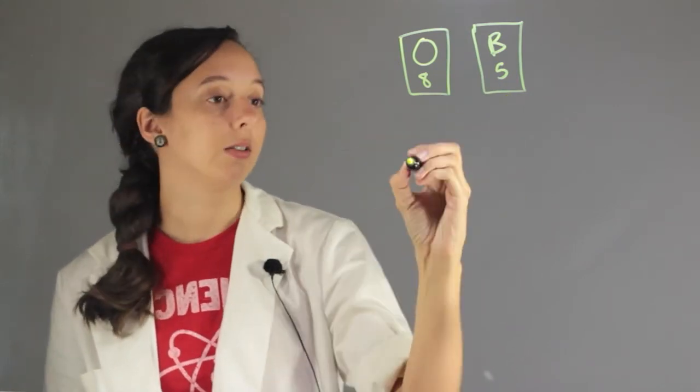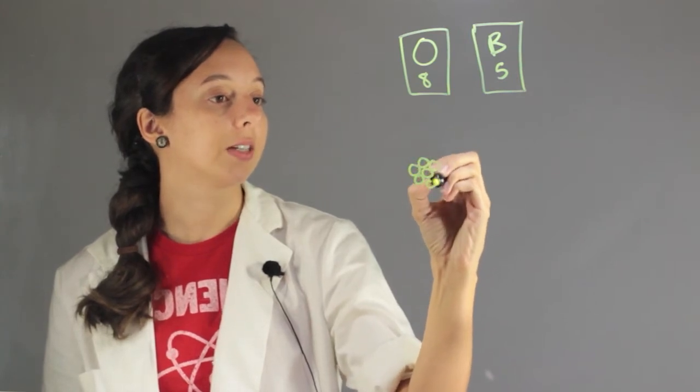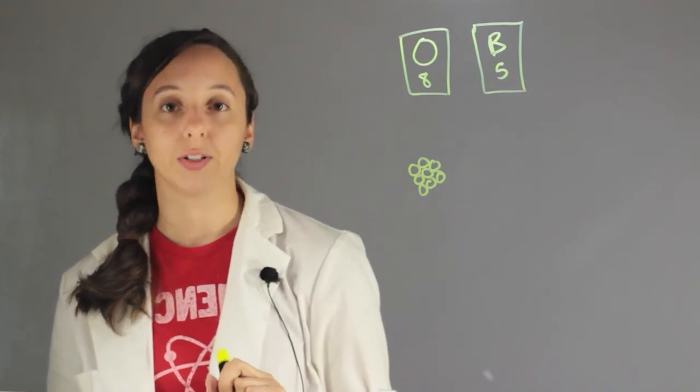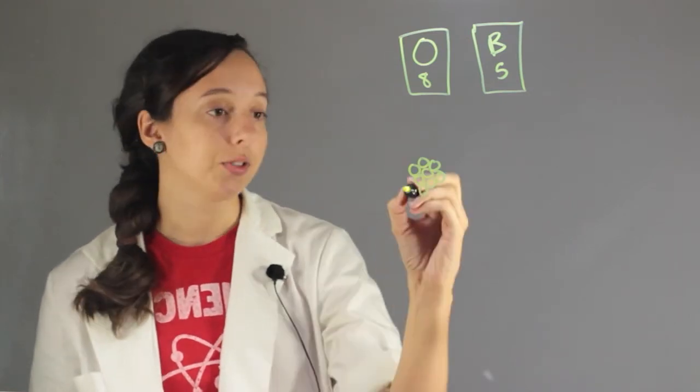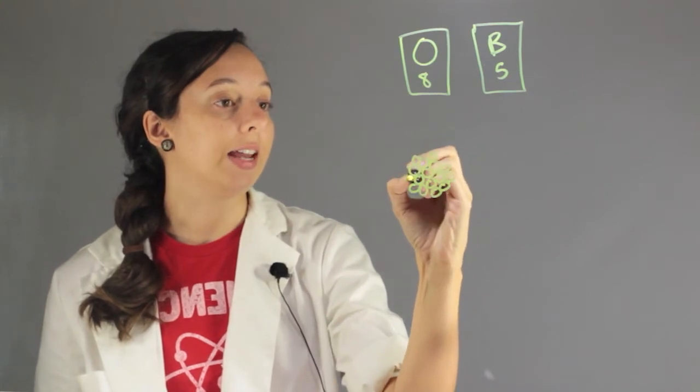So if we draw the nucleus, oxygen has one, two, three, four, five, six, seven, eight protons. But that's not the end, because it also has probably eight neutrons: one, two, three, four, five, six, seven, eight.